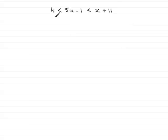So how do we do inequalities like this? We basically consider this inequality, 4 < 5x - 1, solve it for x, and then look at this inequality, 5x - 1 < x + 11, solve that, and combine our results at the end.